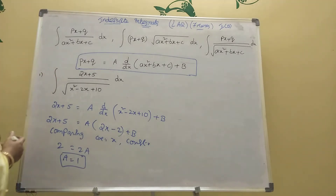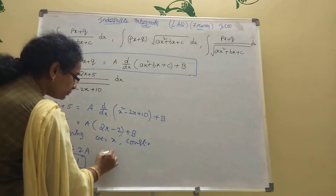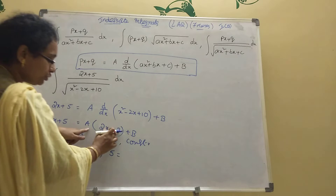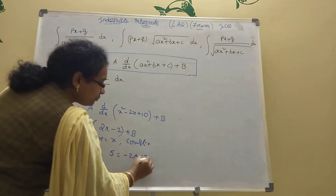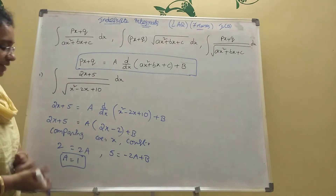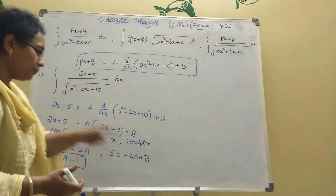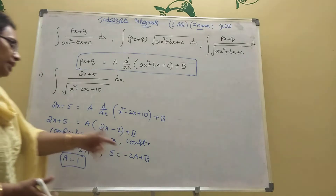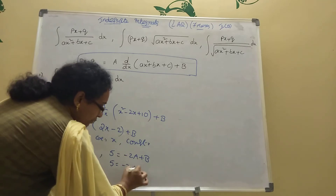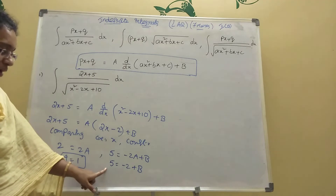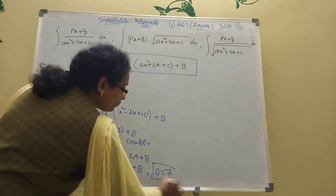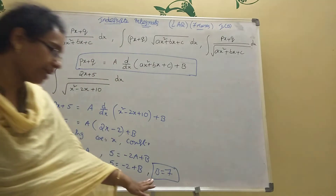Now constants. What are the constants here? 5 equal to minus 2a plus b, because there is no x term. Minus 2 into a, plus b. You got a value now, so update: 5 equal to minus 2 into 1, minus 2 plus b. Send minus 2 to this side: 5 plus 2 equals 7. Then b value is 7.